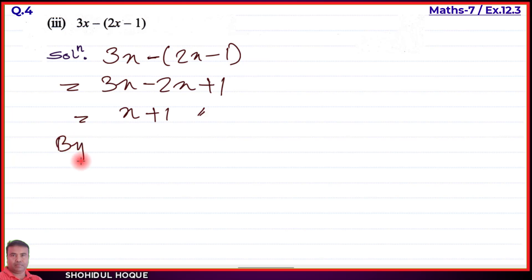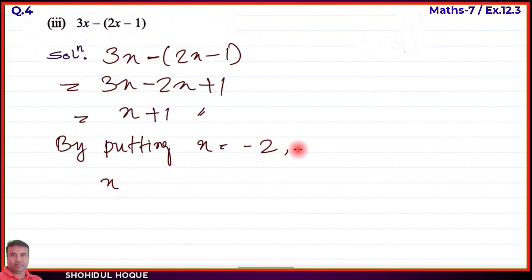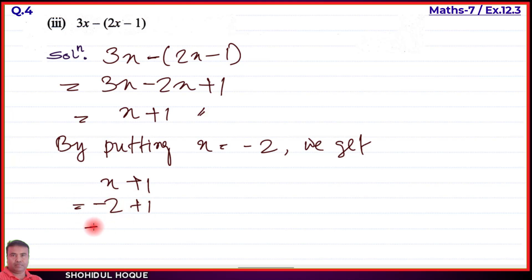By putting the value x equal to minus 2, we get: x plus 1 equals minus 2 plus 1 equals minus 1. The answer is minus 1.